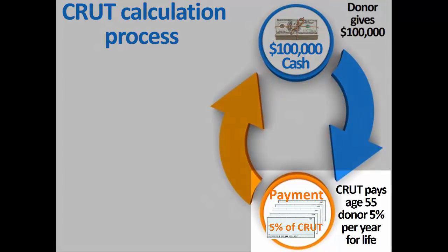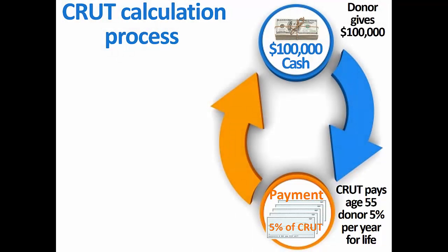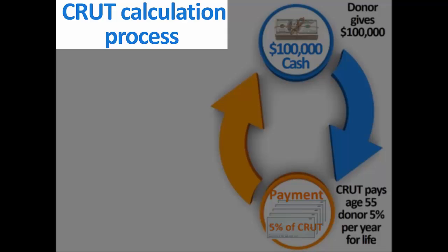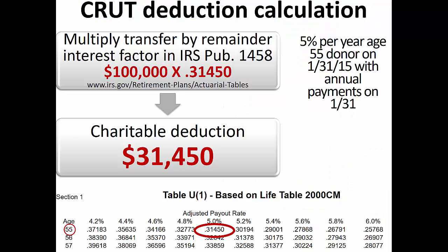Now suppose the donor is receiving not a fixed dollar payment, but rather 5% of all assets inside the charitable remainder trust as of the anniversary date of the initial transfer. This is a unitrust, not an annuity trust. The process for calculating the charitable income tax deduction resulting from a transfer to a charitable remainder unitrust differs slightly from the annuity trust calculation, though the concept is identical: the deductible gift is the difference between the transfer and the value of the payment stream promised to the annuitant. There are actually fewer steps for calculating the deduction for a charitable remainder unitrust.